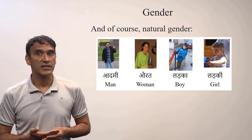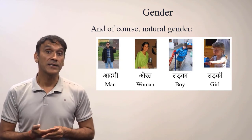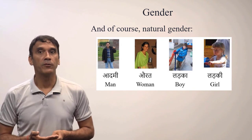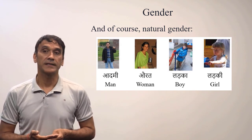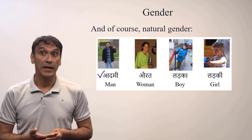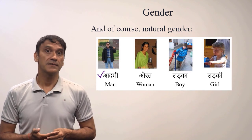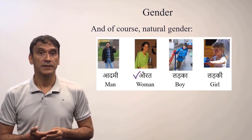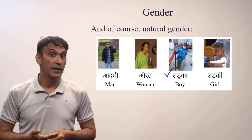Of course, natural genders override the ending rule — the natural gender is the grammatical gender. Men is masculine and woman is feminine. For example, the word for man is aadmi — it ends in 'e', but regardless of the ending, aadmi is masculine. Aurat means woman and is feminine. Ladka means boy and is masculine. Ladki means girl and is feminine.